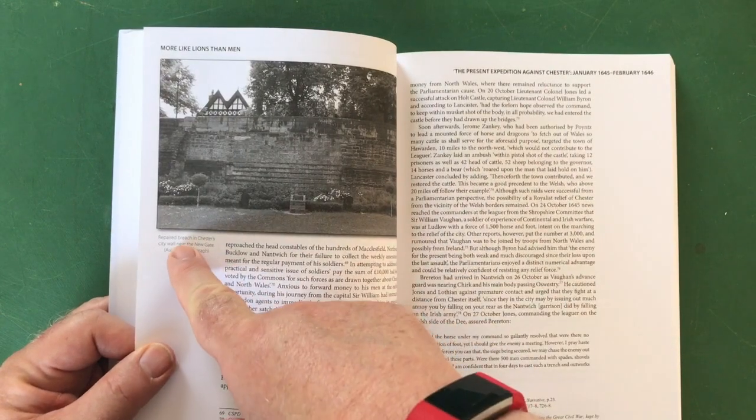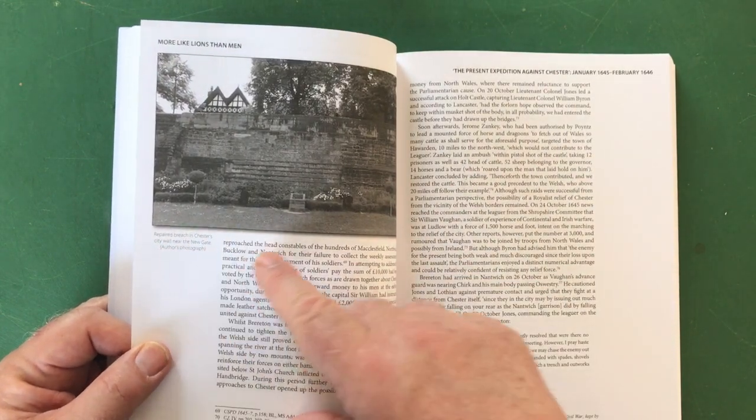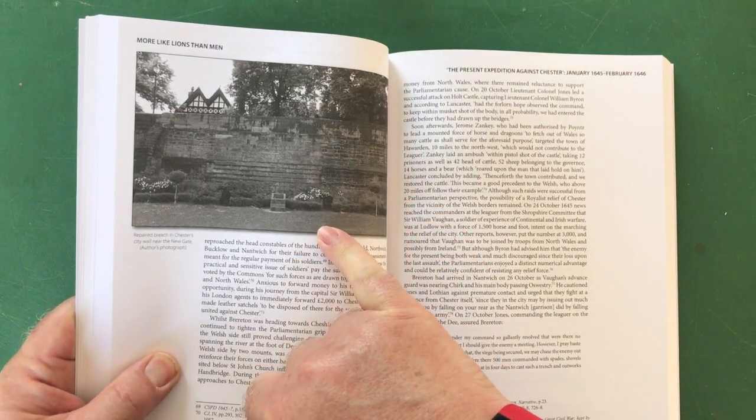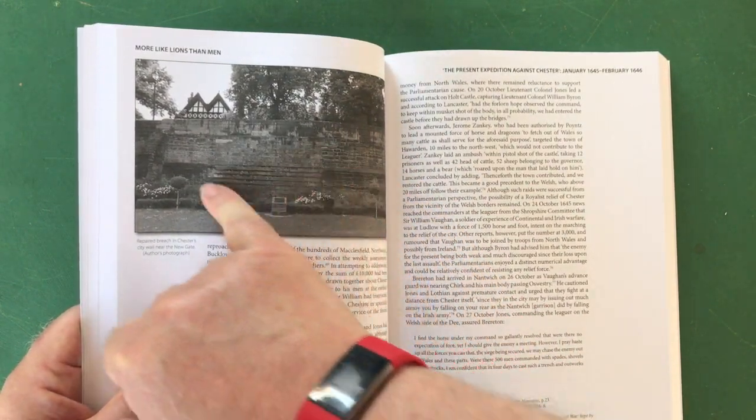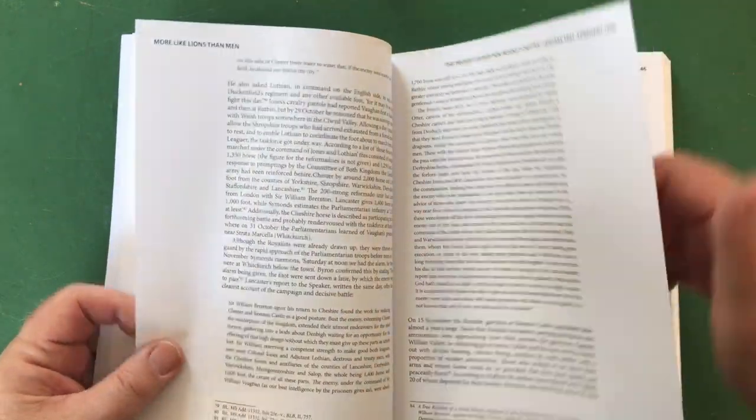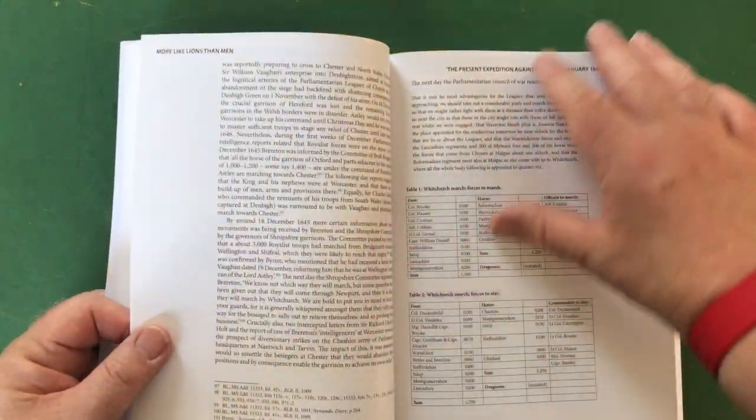People who are local to that area I'm sure you'll find this fascinating. Here we are, the repaired breach in Chester's city wall near the New Gate. You can see actually the change in the brickwork showing where it's been patched up. You've got to look out for these things when you're out and about, obviously a bit difficult at the moment.